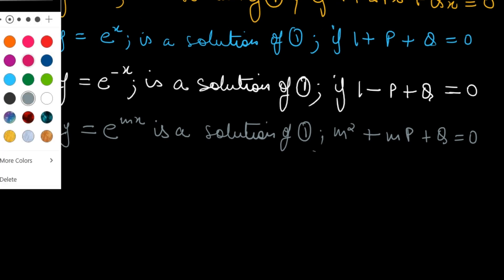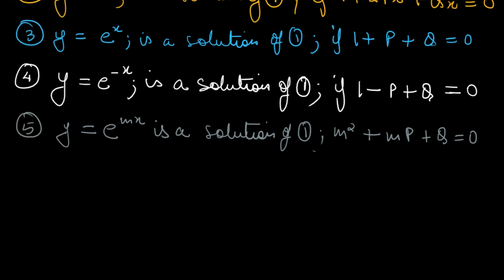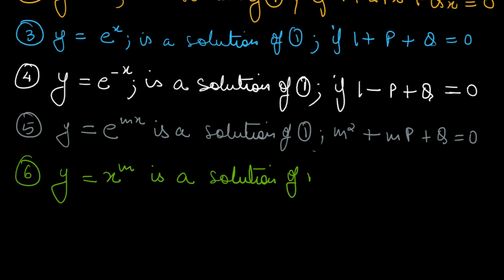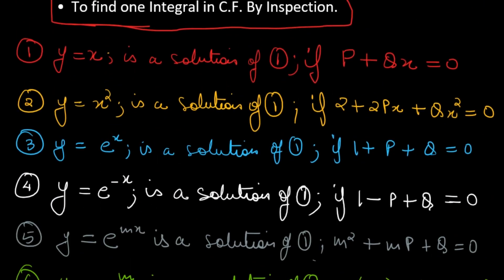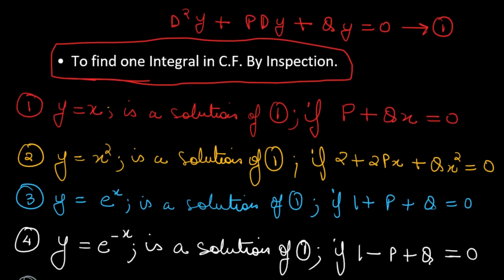Point six: when y = xᵐ is a solution of equation one, that will happen only when m(m-1) + Pmx + Qx² = 0.